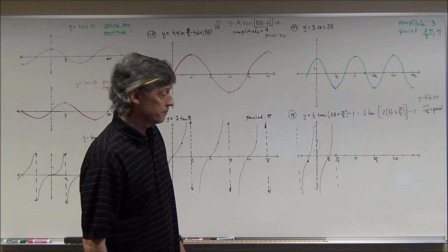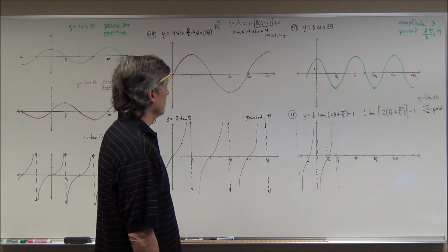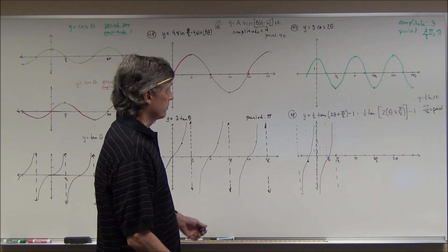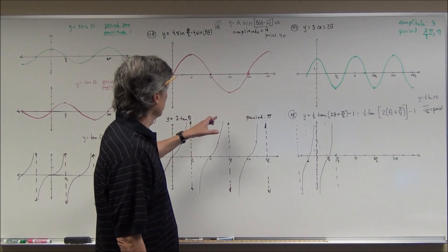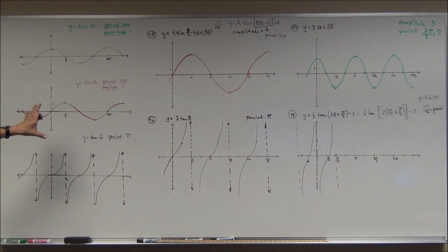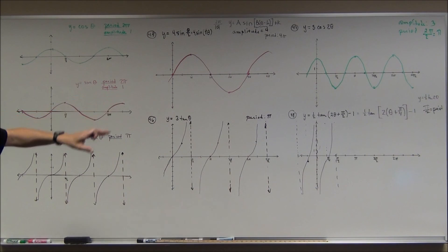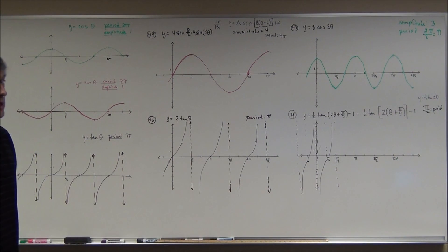Problems 49 and 50 follow the same kind of pattern — I'll leave those for your fun and enjoyment. This should hopefully give you some insight into what to look for. You must know your parent graphs to have a chance to graph these transformations of sine, cosine, and tangent. Practice, practice, practice.